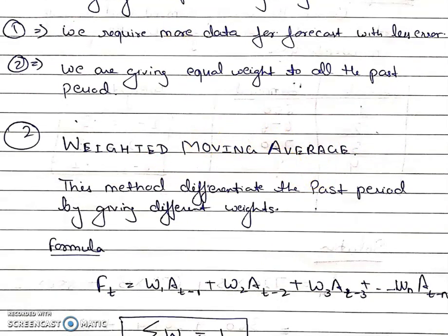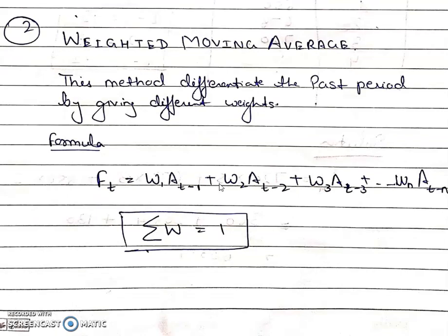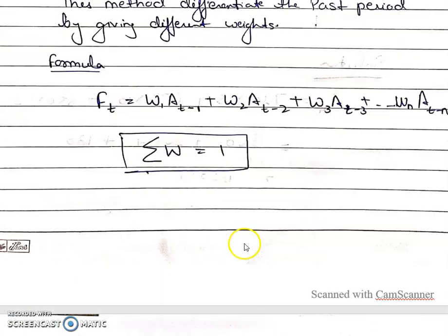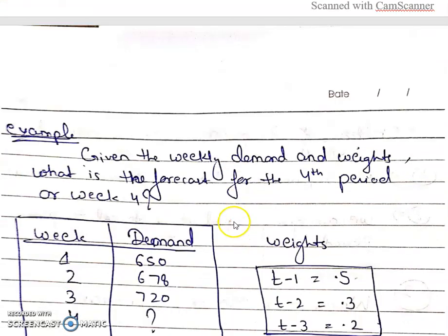The next updated method of moving average is weighted moving average, and in this method we overcome the above two problems. In weighted moving average, we assign weights to past periods, and with the help of these weights we differentiate the past periods. The formula is: FT = W1·A(t-1) + W2·A(t-2) + W3·A(t-3) + ... with one condition: the sum of all the weights must equal 1.